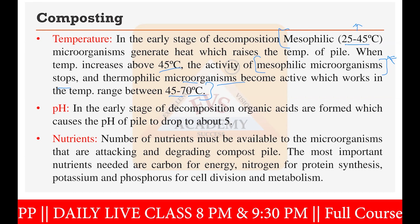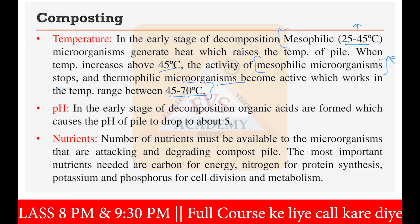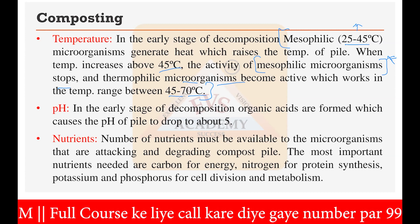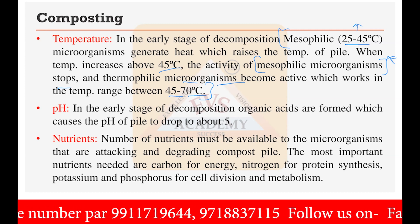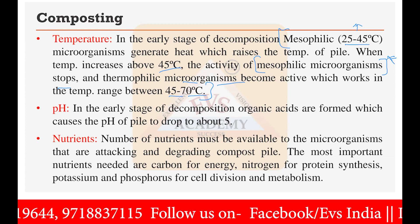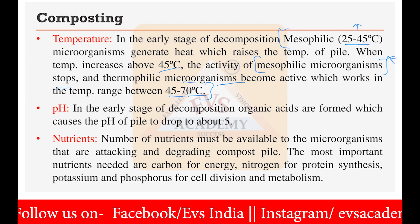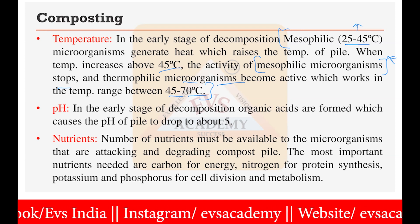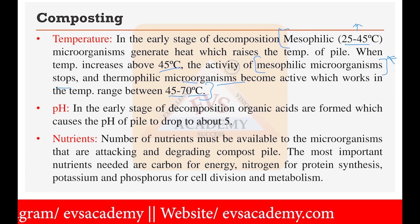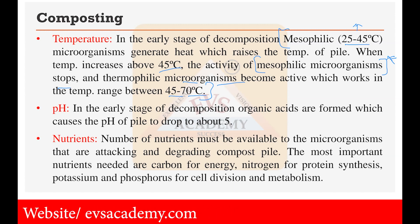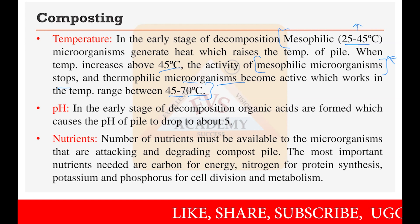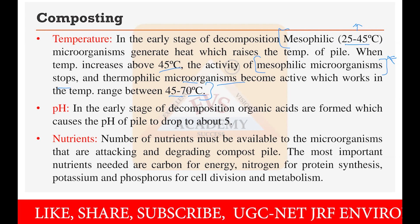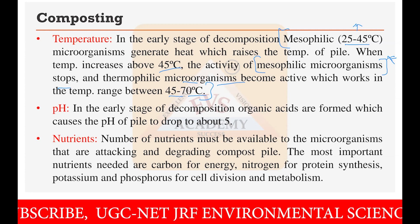Nutrients must be available to the microorganisms attacking and degrading the compost pile. The most important nutrients are carbon for energy — microorganisms feed on the carbon of the waste material — nitrogen for protein synthesis, and potassium and phosphorus for cell division and metabolism. All these nutrients should be present in your waste material for composting to work, as microorganisms cannot survive without them.